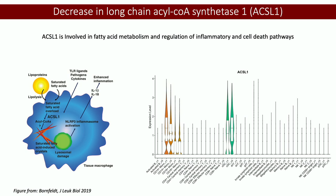Another interesting feature is a decrease in long-chain acyl-CoA synthetase 1. We were interested in this at the outset because it's involved in some of the cell injury pathways — among other things it's involved in fatty acid transport and can be involved in the inflammasome pathway. In our two monocyte populations it generally goes down, while in another cell population it goes up. We're assuming down is better in this case — but that's a qualified caveat, because we don't understand enough about the drivers of cerebral ALD.